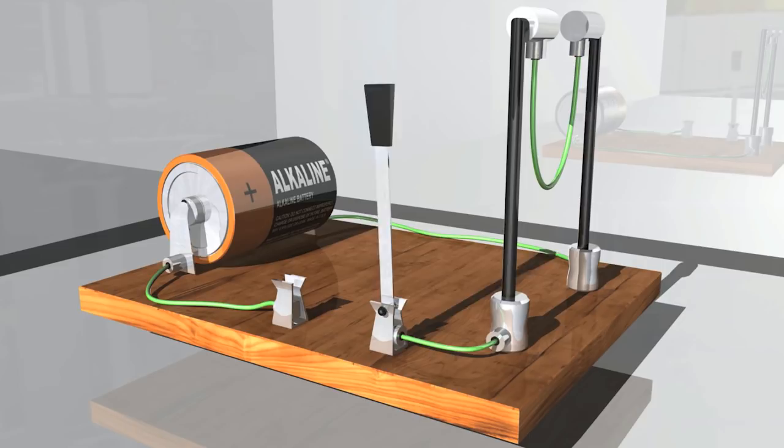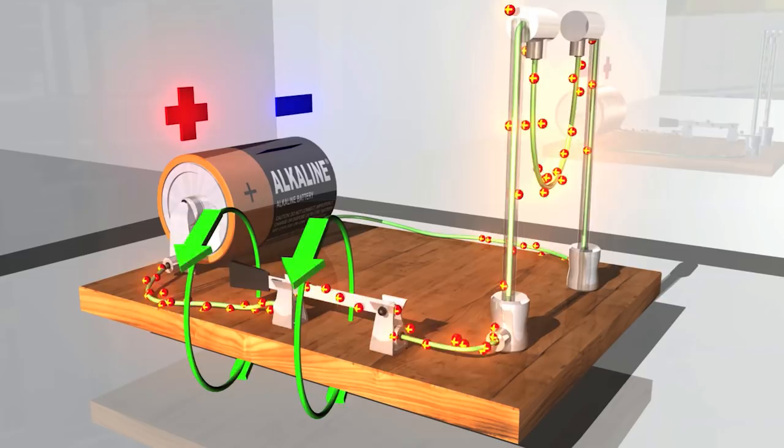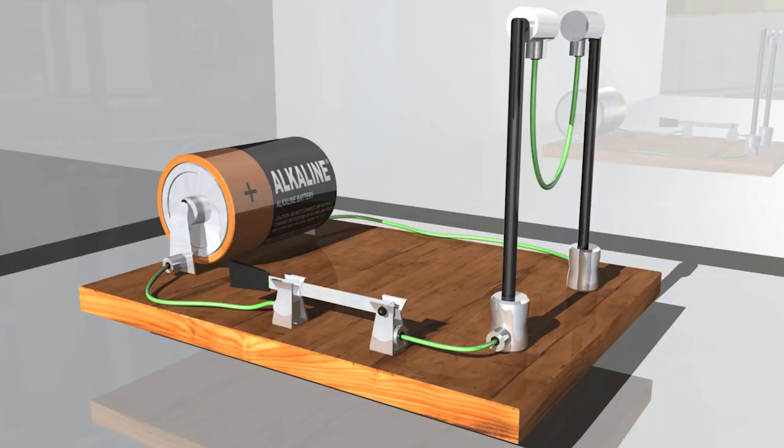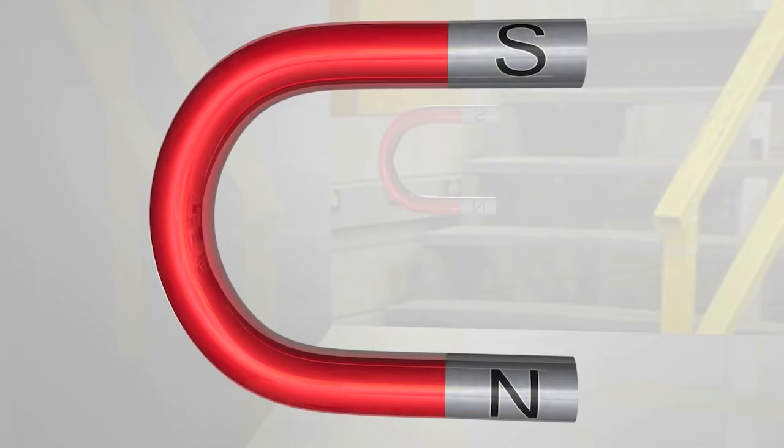The magnetic field produced by the current will interact with another magnetic field, just the way two magnets repel or attract each other. Here's a horseshoe magnet with a north and south pole. The magnetic field always points from north to south, as shown by the blue lines.